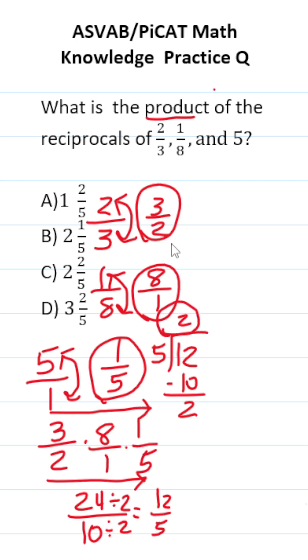This 2 right here is going to be our whole number. This remainder of 2 is going to be the numerator of our fraction. And this 5 right here is going to be the denominator. So 12 over 5 is the same thing as 2 and 2 fifths, which is answer choice C.